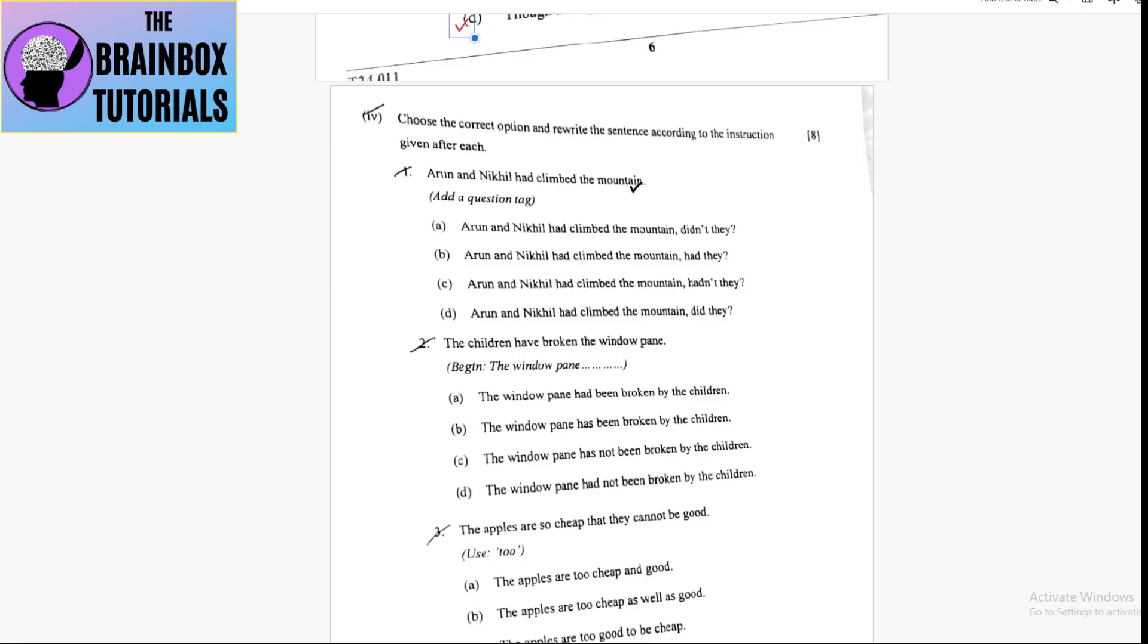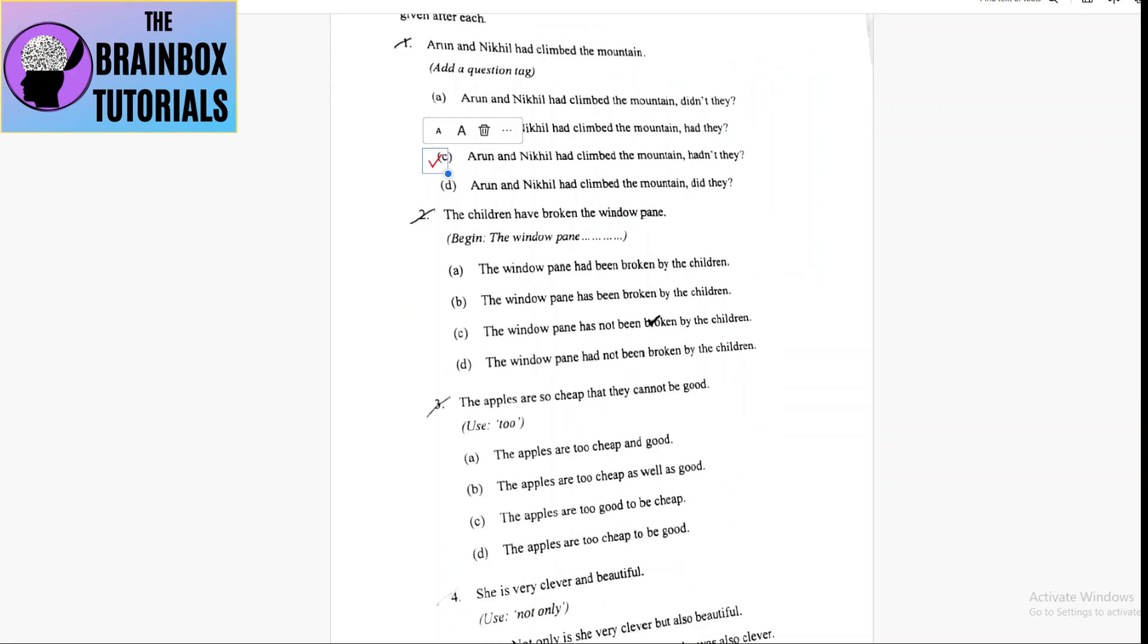That is number C. Number two: the children have broken the window pane. The window pane has been broken by the children, right. Because 'have' is used here because children is plural, but window pane is singular, that is why 'has' will be used in present perfect.